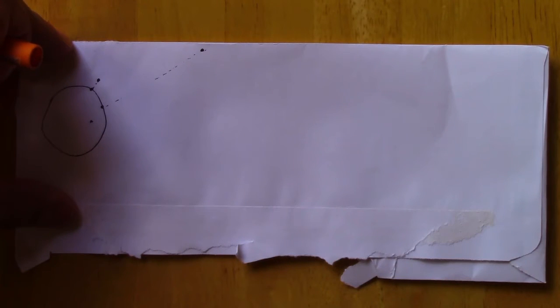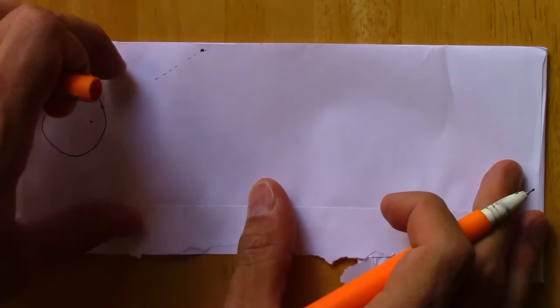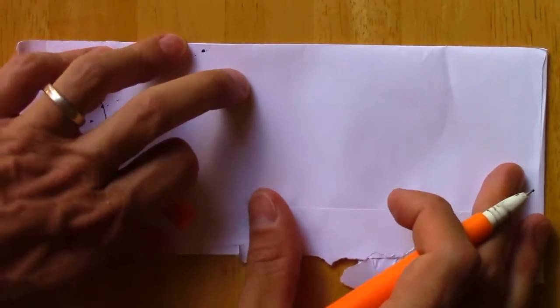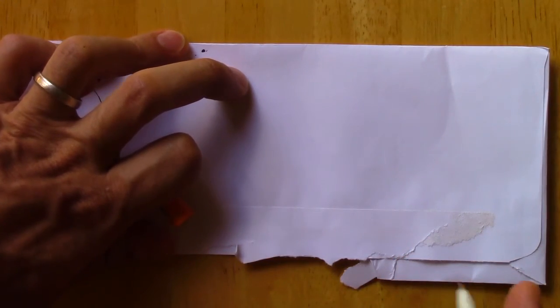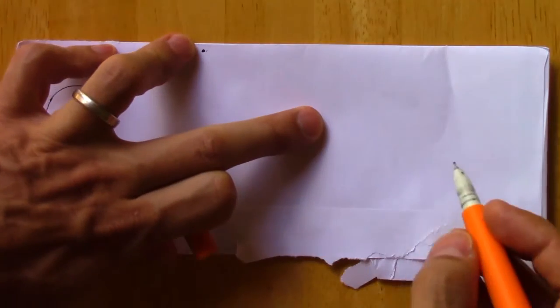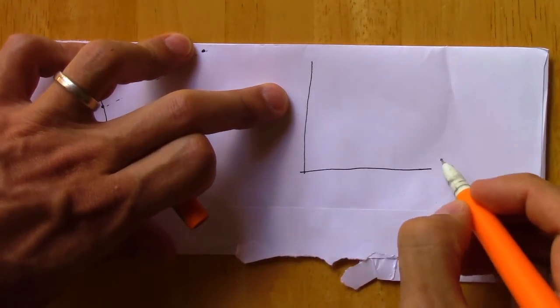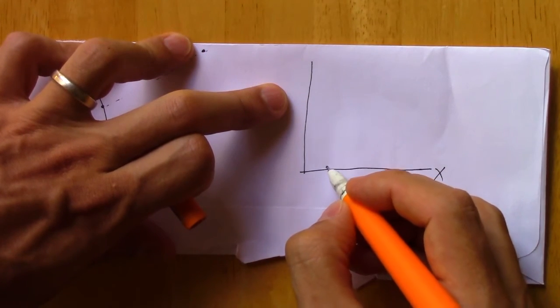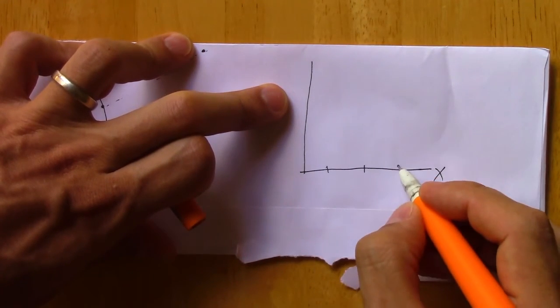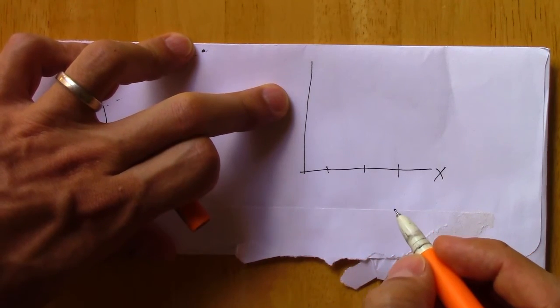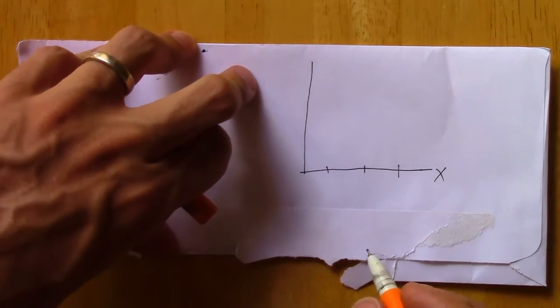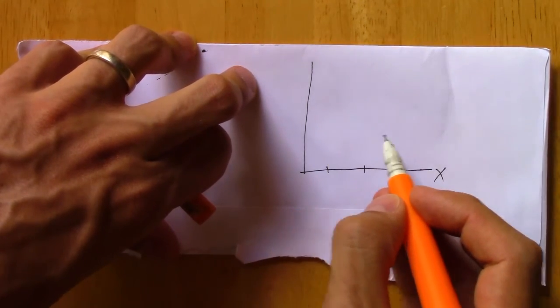And the same intuition carries over when thinking about linear projection and best linear approximation and best linear predictor. If we have x where we have three values like this...